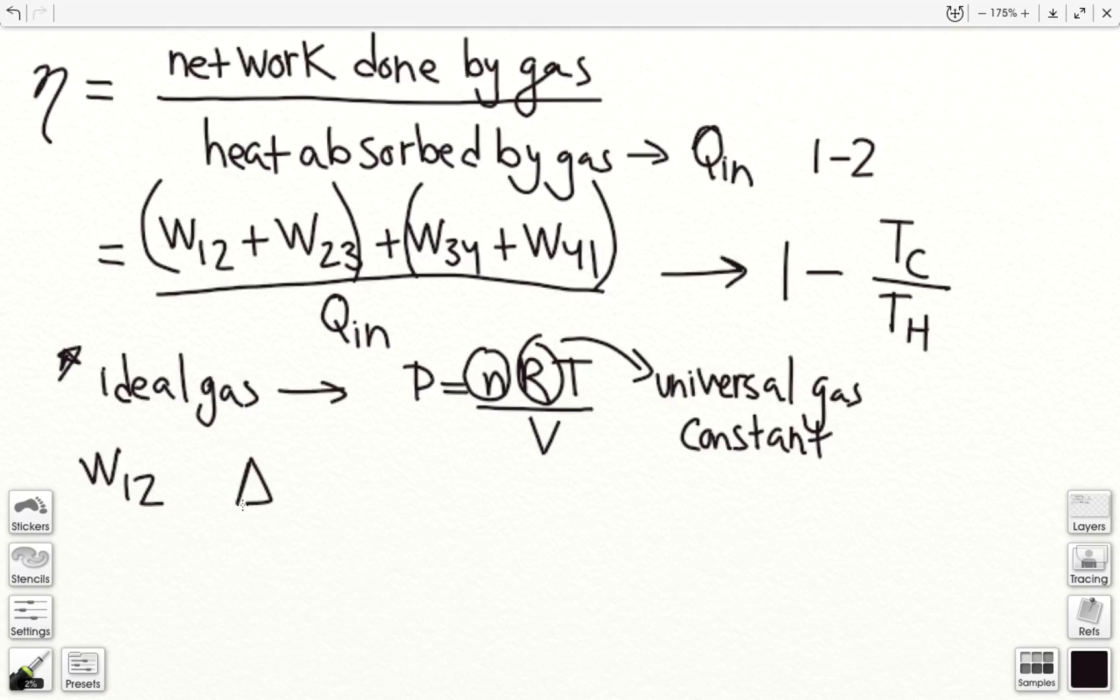And so we can make this, we know that the change in internal energy, because it is an isothermal process, from 1 to 2 is equal to 0. Going back to your thermodynamics, the change in internal energy is equal to Q in minus work.